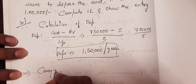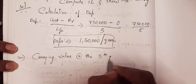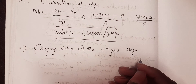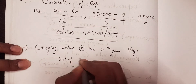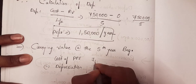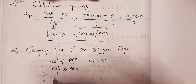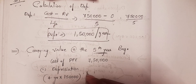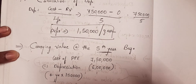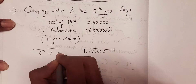Next, calculate the carrying value at the beginning of the fifth year. Beginning of the fifth year means four years have already been completed. Carrying value equals cost of PPE minus accumulated depreciation. Cost of PPE is seven lakh fifty thousand. Depreciation for four years is one lakh fifty thousand multiplied by four, which equals six lakh. So carrying value is seven lakh fifty thousand minus six lakh, which is one lakh fifty thousand.